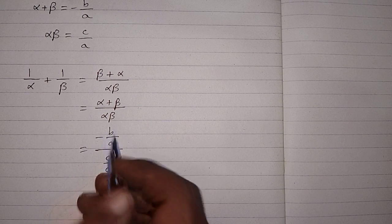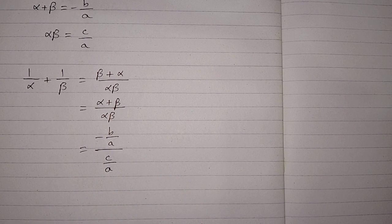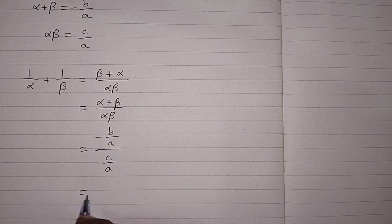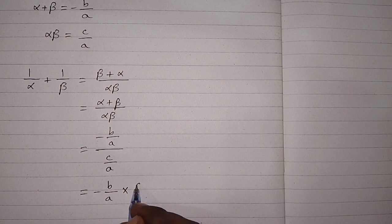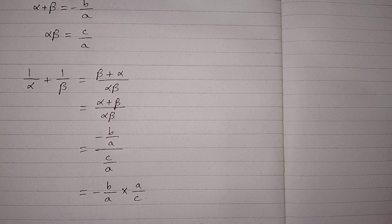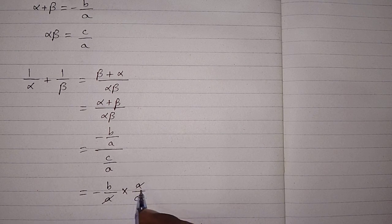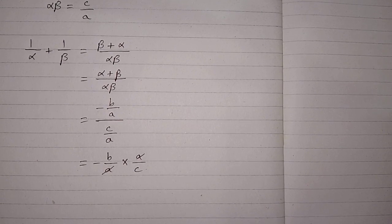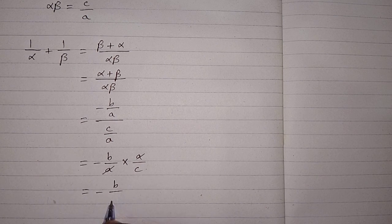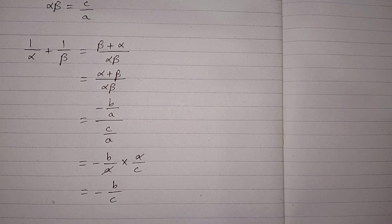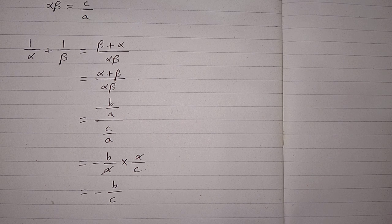This can be written as minus b upon a multiplied by a upon c. We can cancel a and a, so the value is minus b upon c. Therefore, the value of 1 upon alpha plus 1 upon beta is minus b upon c.